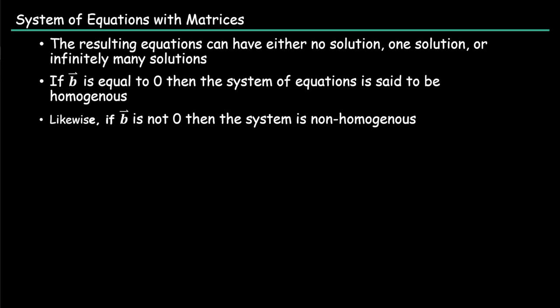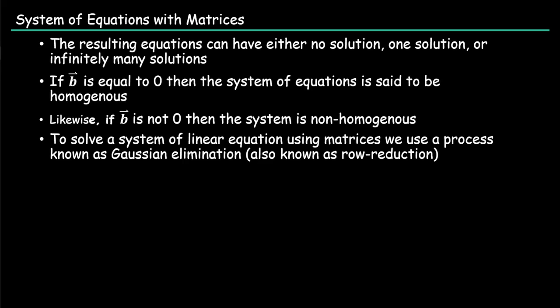The way we're going to solve these linear equations using matrices, we use a process of what is known as Gaussian elimination. The most common way of saying this is row reduction. Gaussian elimination is a little fancy, but it's most commonly known as row reduction.